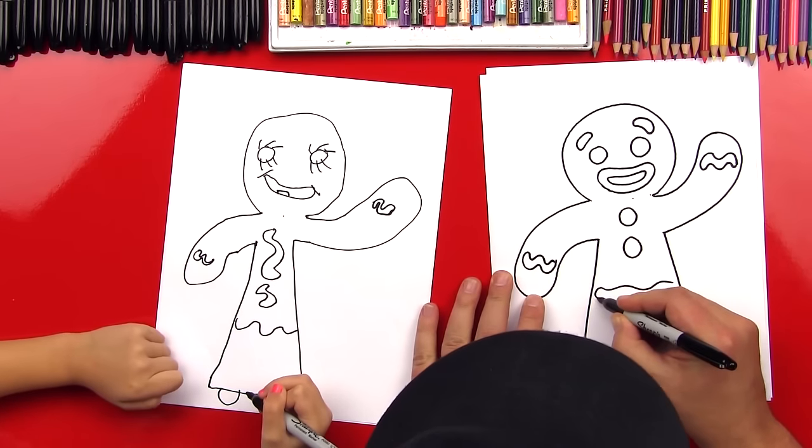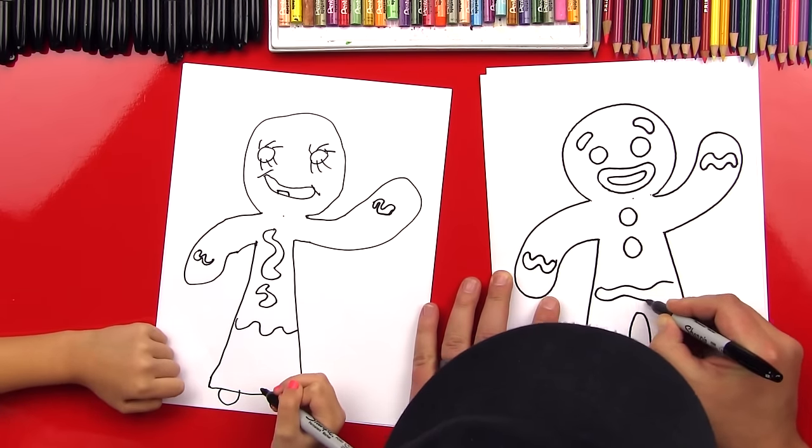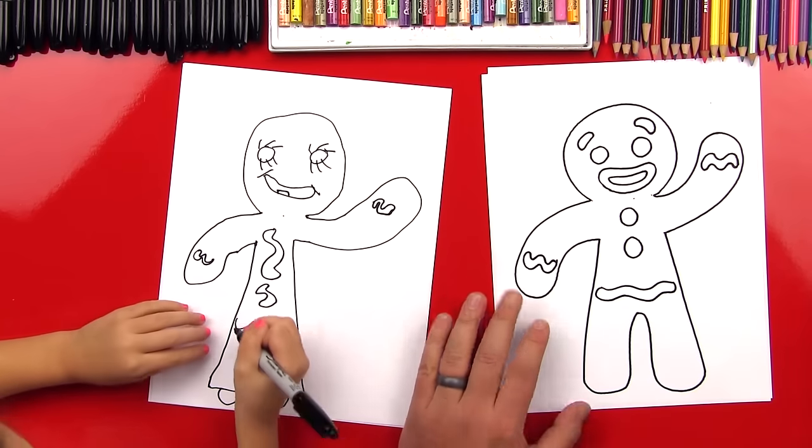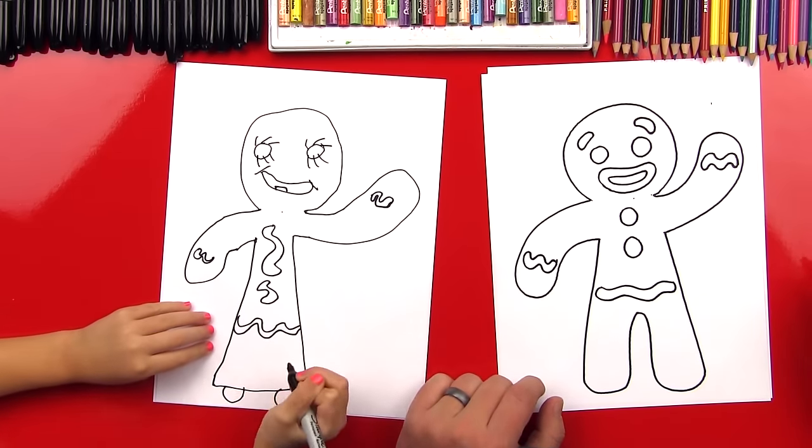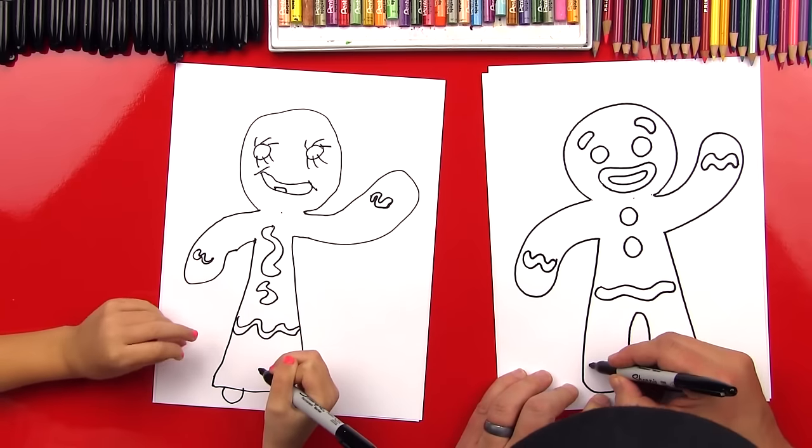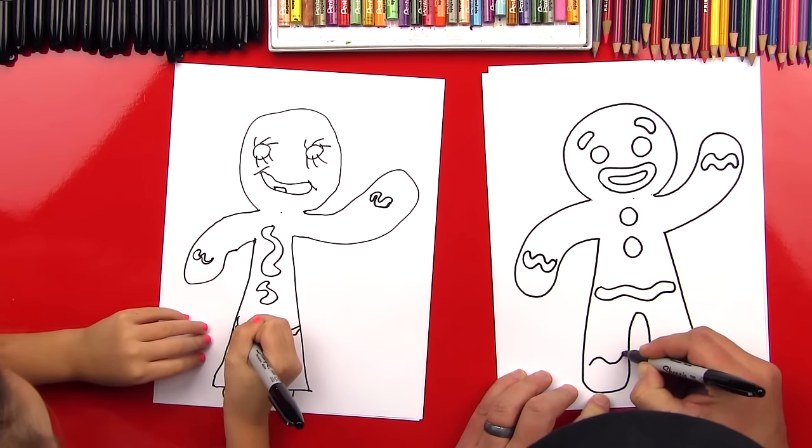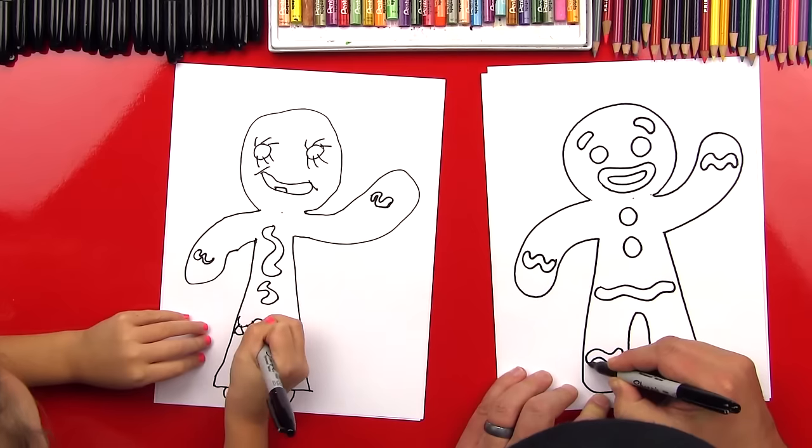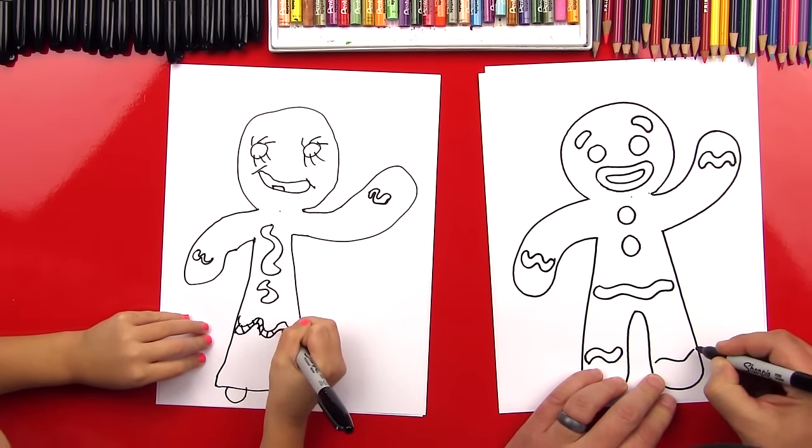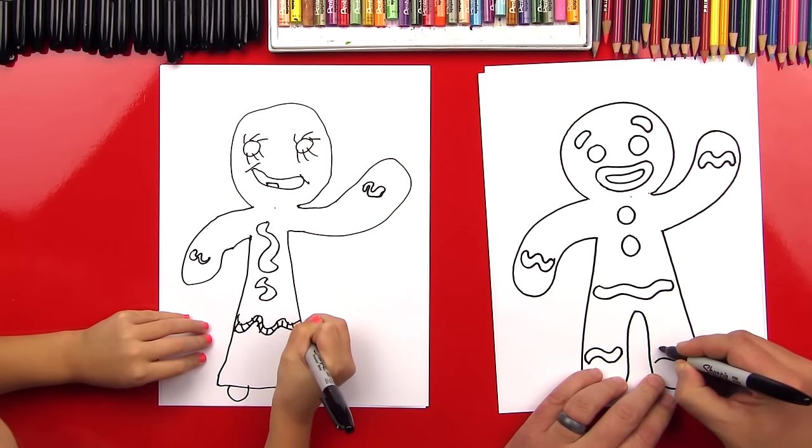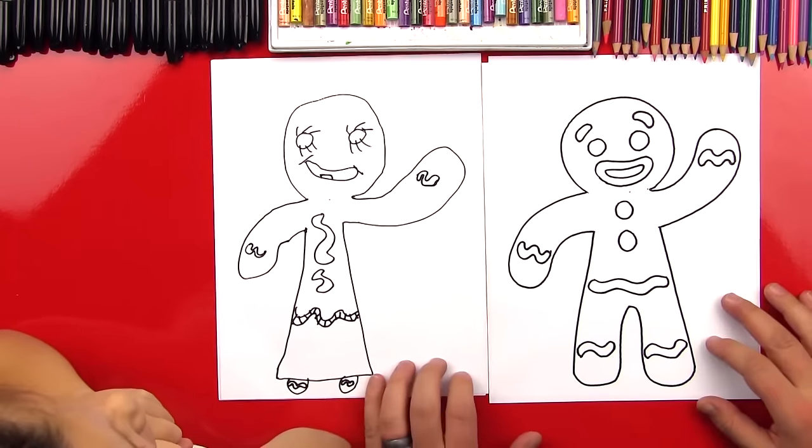Alright, so I'm gonna keep going. I'm gonna make the other side of his belt. Good, and then I'm gonna do one more down here on the legs. Stripes in the belt, yup. And then I'm gonna do another one on this side. Good job Hads, give me five. Did you have fun making your gingerbread girl? Yes.